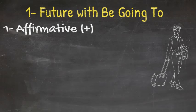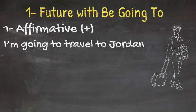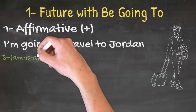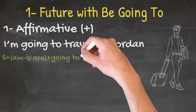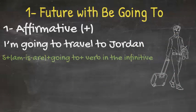Number 1, affirmative. For example, I am going to travel to Jordan. To form the sentence, use subject plus am or is or are, plus going to plus verb in the infinitive.